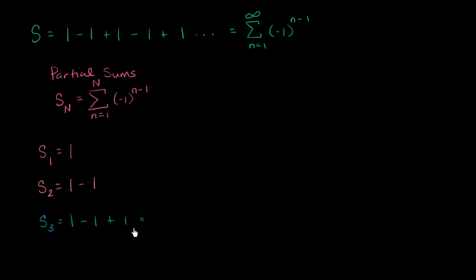let's see this is equal to 1, this one over here is equal to 0. S sub 4, we could keep going. S sub 4 is going to be 1 minus 1 plus 1 minus 1, which is equal to 0 again.